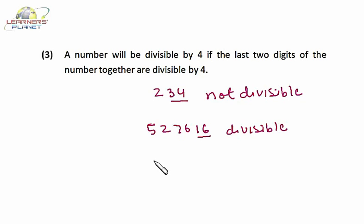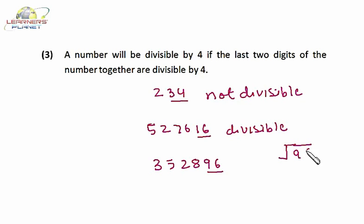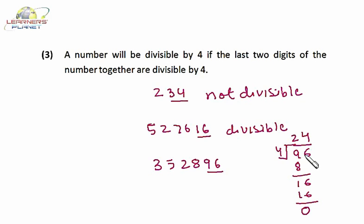Let's take one more example: 352896. Now just see the last two digits — it's 96. Let's check whether 96 is divisible by 4 or not. Dividing 96 by 4, we get a remainder of 0. That means 96 is divisible by 4, or 96 is a multiple of 4. The last two digits are a multiple of 4, hence the entire number will be divisible by 4.